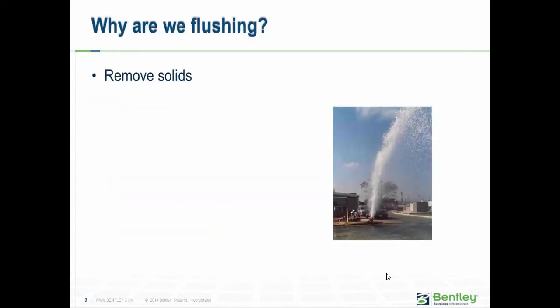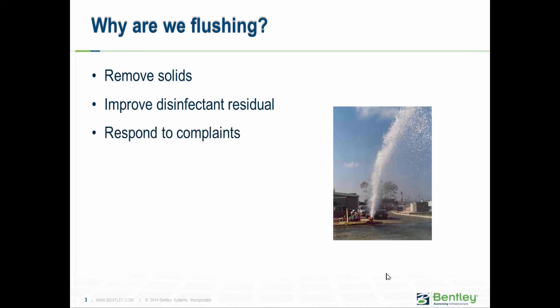Why are we flushing? Removing solids is usually the most common reason — you're trying to increase velocity. Improving disinfectant residual means moving clean water into an area with stale water. Responding to complaints is kind of hit or miss — it depends on what the exact complaint is. In some cases, the goal is removing biofilm, where you need to get a very high velocity in the distribution system. Each of these reasons requires a different approach.